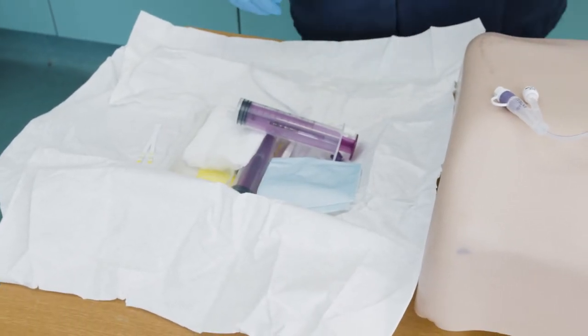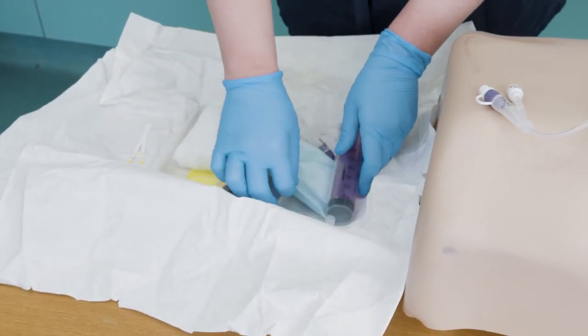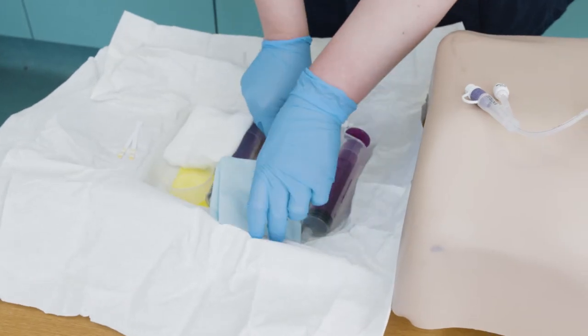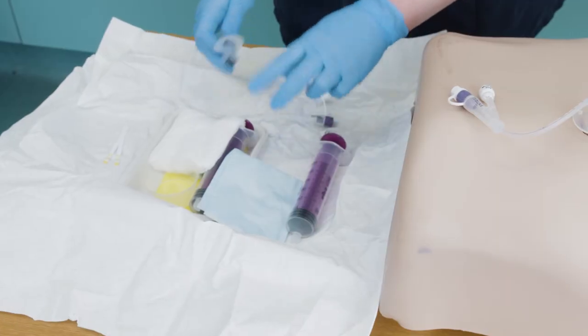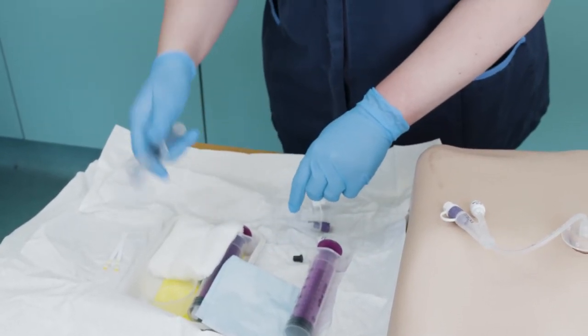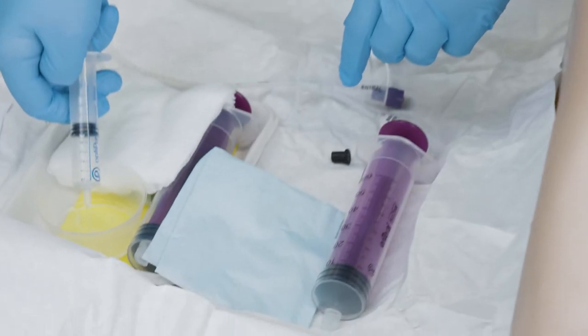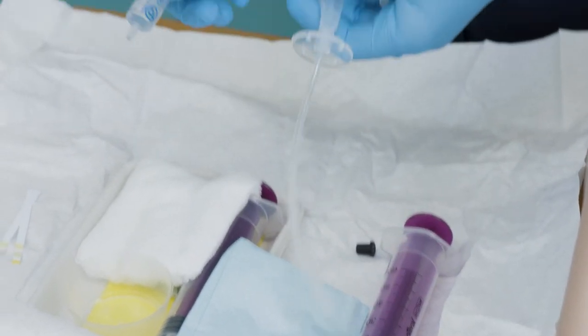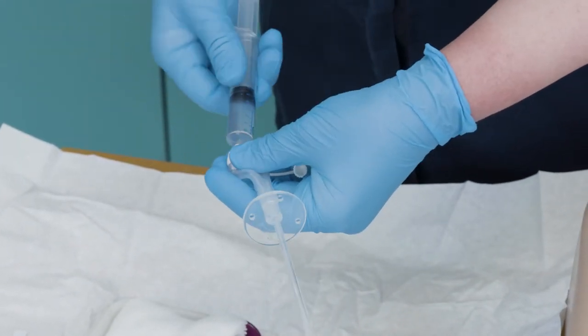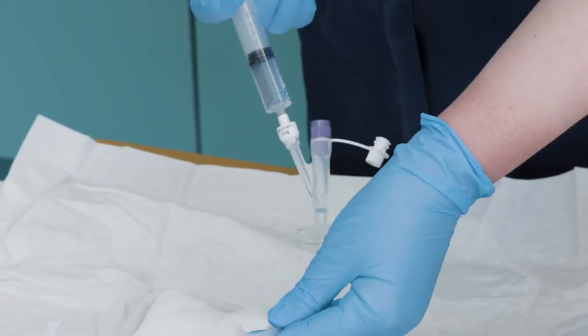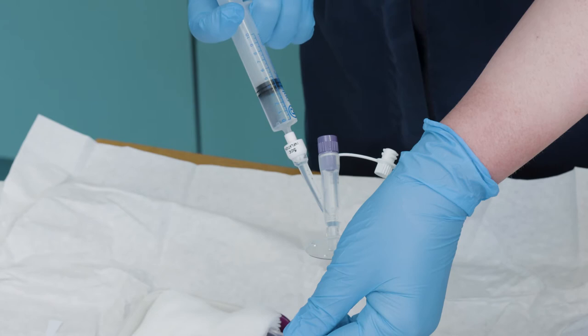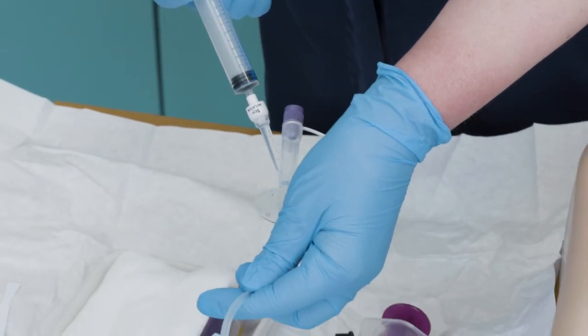Check the balloon on the new tube by inserting the manufacturer's recommended volume of water for injection into the inflation valve using one of the two Luer slip syringes, i.e. the one filled with water for injection from the gastrostomy pack if available. The recommended volume of water will be on the balloon valve. Ensure that there are no leaks in the balloon and that it is symmetrical.